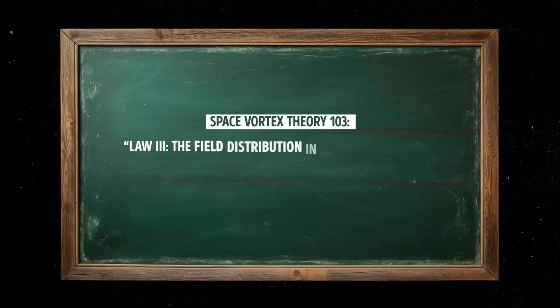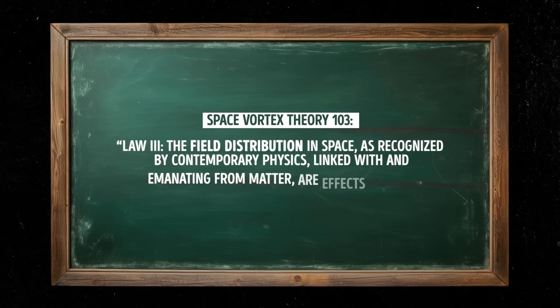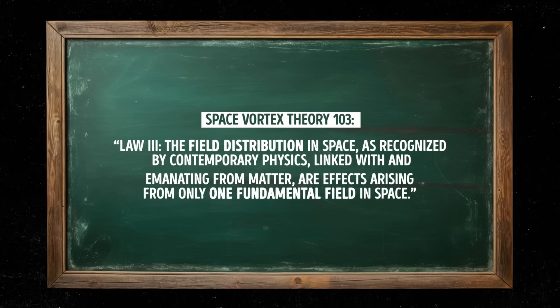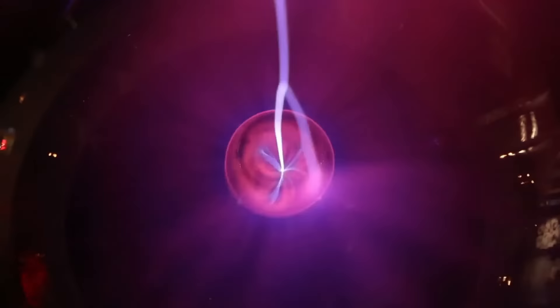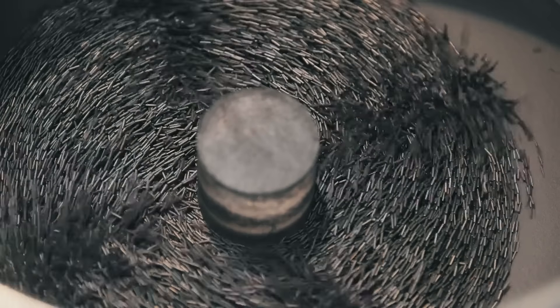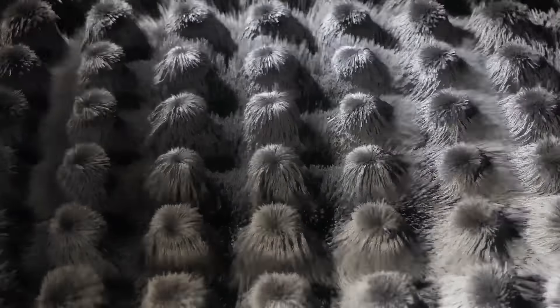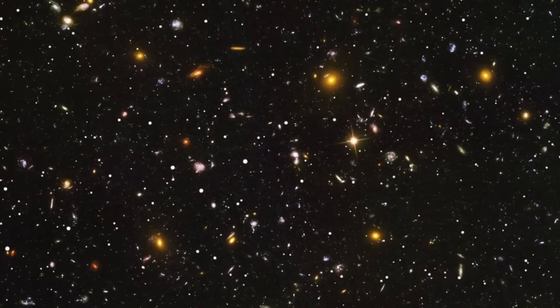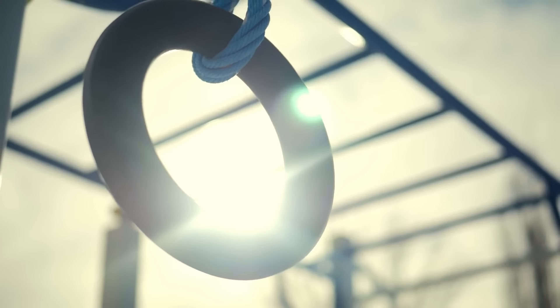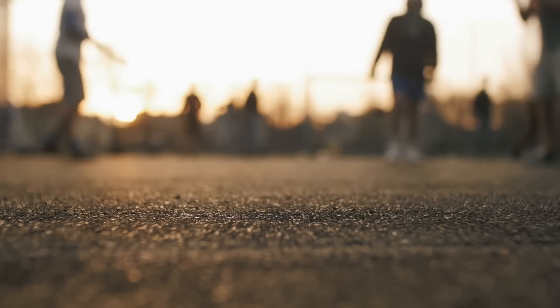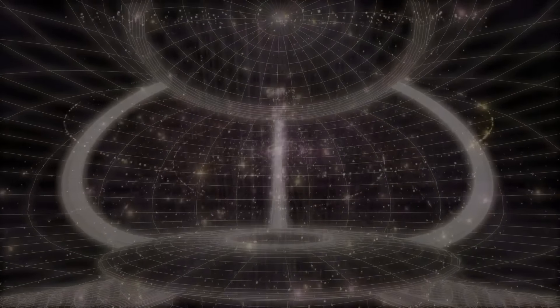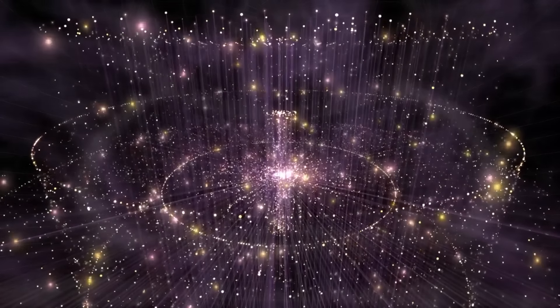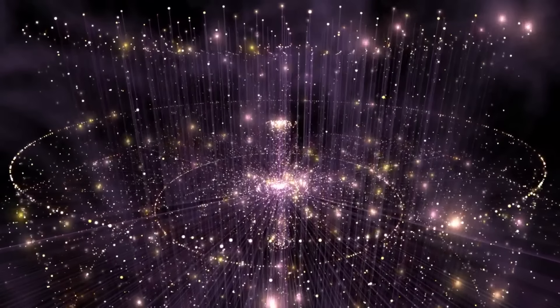Law 3: The field distribution in space, as recognized by contemporary physics, linked with and emanating from matter, are effects arising from only one fundamental field in space. This law states that fields like the electromagnetic and gravitational fields are effects arising from a single fundamental field in space. Imagine that the universe is like a big playground. All the different fields we observe are like different games we play in there. But no matter what we play, we're still in one fundamental space — the playground itself. Without this fundamental field in space, we wouldn't be able to observe any fields in the universe.